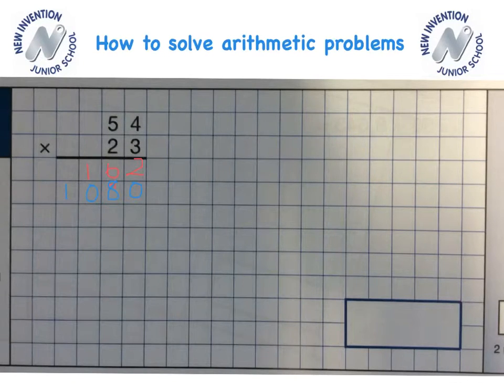My final stage is to add these two numbers together. So I'll do that as I would any other column addition. So starting with the units column, 2 plus 0 is 2. 6 plus 8 gives me 14. And I'll carry the 1 over into the hundreds column. 1 plus 0 plus 1 gives me 2. And 1 and nothing is 1. So my final answer would be 1242.